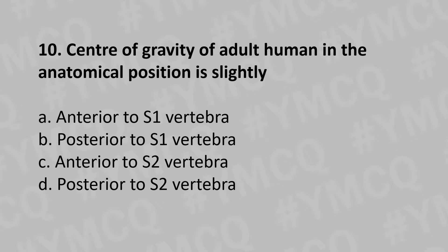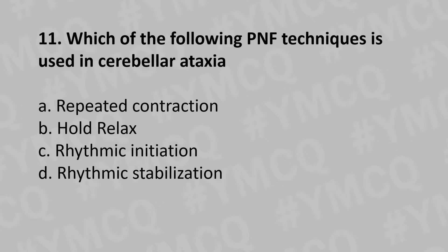The center of gravity of an adult human in anatomical position is slightly: Option A: Anterior to S1 vertebra, Option B: Posterior to S1 vertebra, Option C: Anterior to S2 vertebra, Option D: Posterior to S2 vertebra. And the answer is Option C: Anterior to S2 vertebra.